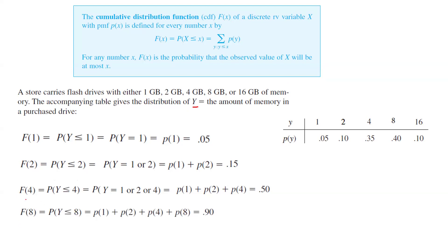Now if I ask you to find F(8), it is the probability that Y is less than or equal to 8, which is the probability of 1 plus probability of 2 plus probability of 4 plus probability of 8. Adding these numbers together gives 90%.